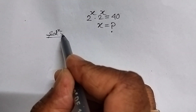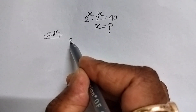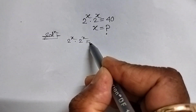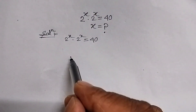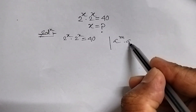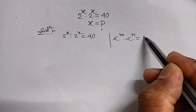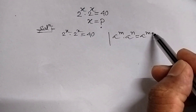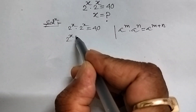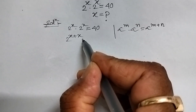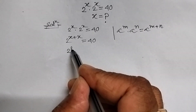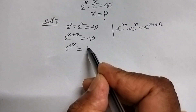To solve the equation, we write it first. That is 2 power x times 2 power x equal to 40. Now, since we know the formula a power m times a power n equal to a power m plus n. Therefore, 2 power x times 2 power x can be written as 2 power x plus x equal to 40.